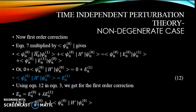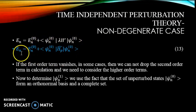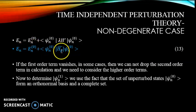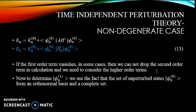This finally gives E_n = E_n0 + ⟨psi_n0 | Hp | psi_n0⟩. Now if in certain cases the first-order term vanishes, we cannot drop the second-order term in the calculation, because it will be the only effective term and hence we need to consider the higher-order terms.